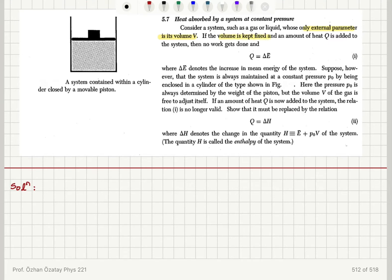If the volume is fixed, Q is equal to delta E bar, where delta E bar denotes the increase in mean energy of the system.